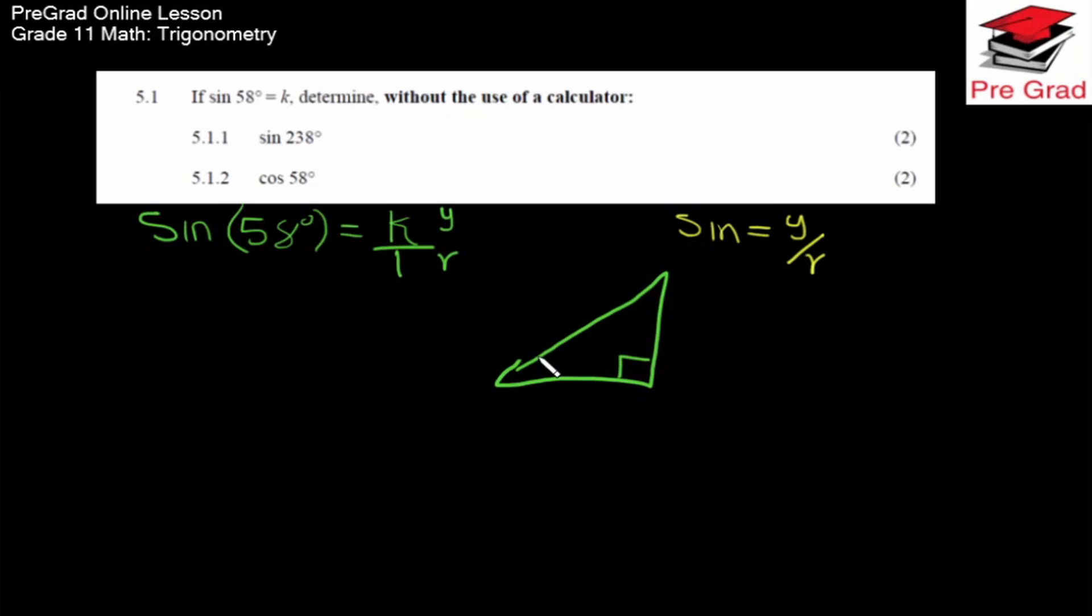So for sine 58 degrees, sine equals opposite over hypotenuse. The opposite is y, which is k. The hypotenuse is 1. Okay.